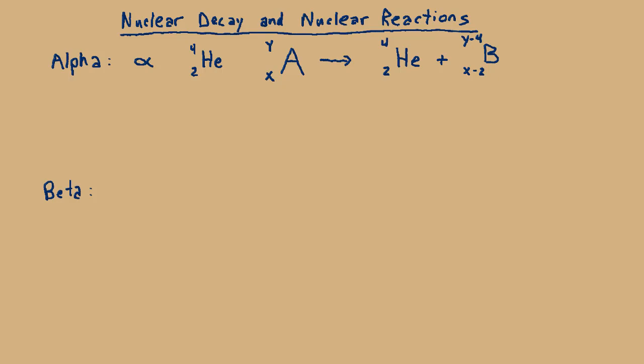This brings up the point of balancing nuclear equations. I assume all of this is review for you. The left-hand side and the right-hand side have to have the same number of particles and specifically the same number of each particle. So the left-hand side has X protons and Y minus X neutrons.